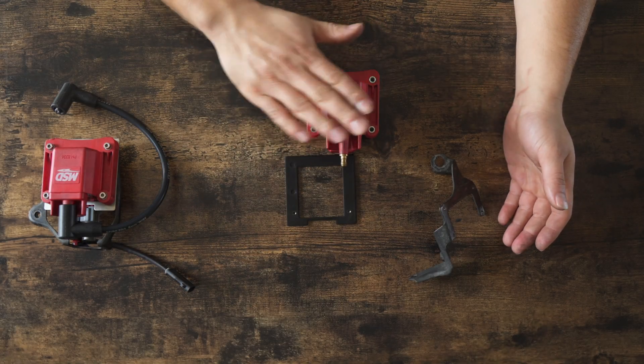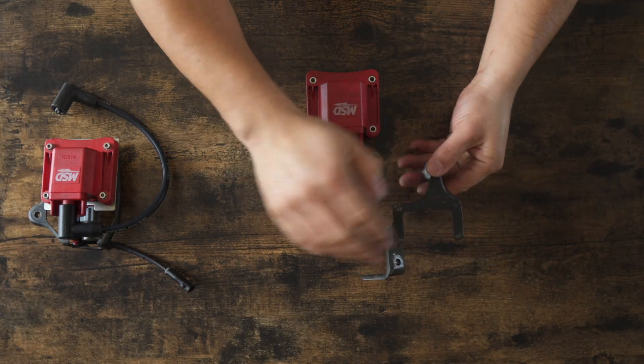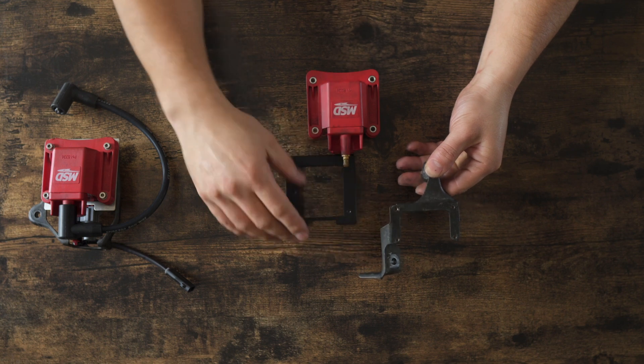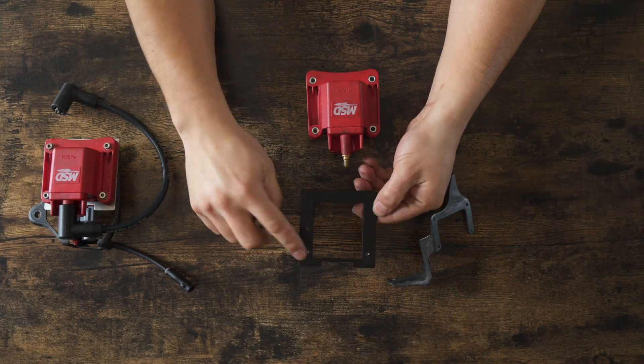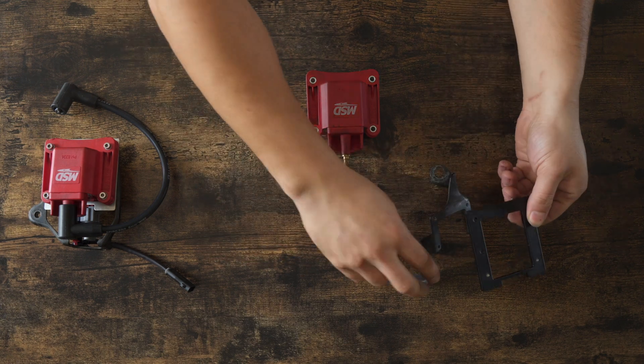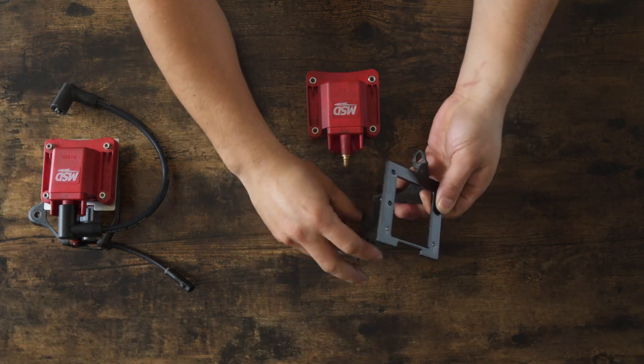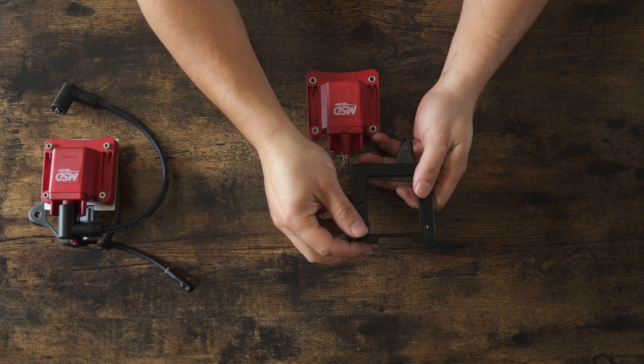Okay. So now we're going to install our MSD kit on our second generation ignition coil brackets. Again, this is the adaptive plate that you're going to need. The three holes here are going to align with this side. And the first thing you're going to do,